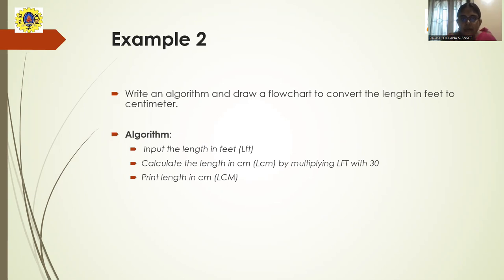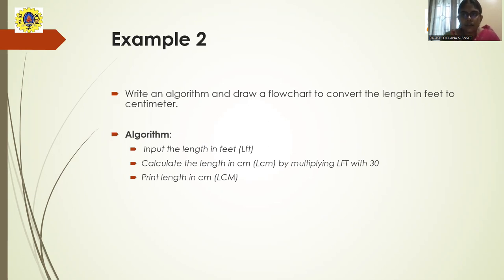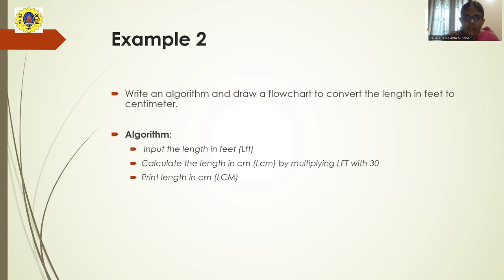Welcome to the lecture series on programming in C and data structures. In today's lecture, let's continue with what we covered in the last session. We discussed what an algorithm is, how to write one, and what a flowchart is along with the various symbols used. We also saw one example: finding the grade of a student based on four marks. Today we will discuss a few more examples and see how to write an algorithm and draw a flowchart for each.